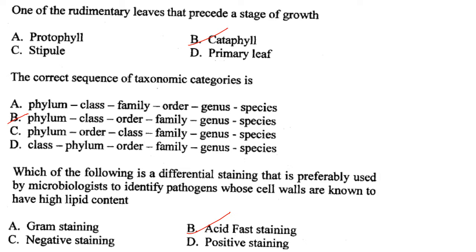Which of the following is a differential staining preferably used by microbiologists to identify pathogens whose cell walls are known to have high lipid content? The answer is acid-fast staining. Answer is option B.